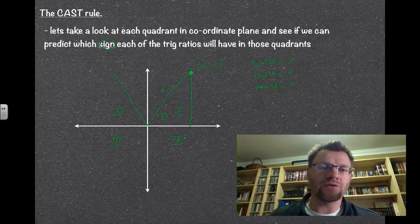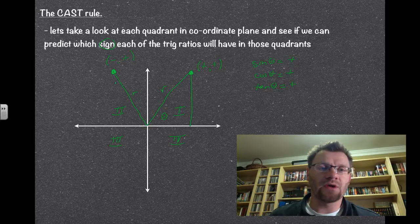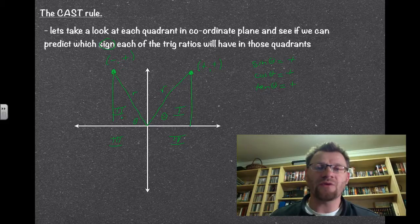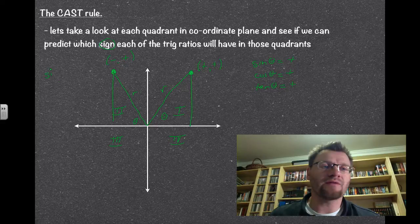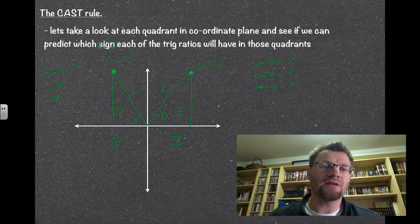In the second quadrant, any point on this line is going to have a negative x value but a positive y value. So when we draw a triangle, the horizontal side — the adjacent side — is negative. So anything that has adjacent in it is going to be negative. Sine, because it's just opposite over hypotenuse, is actually positive. Cosine is negative, and tan is also negative.